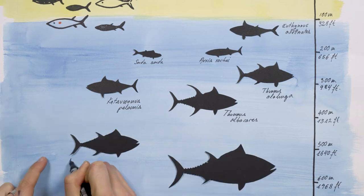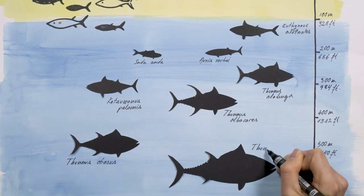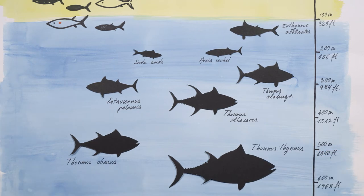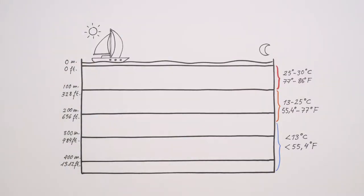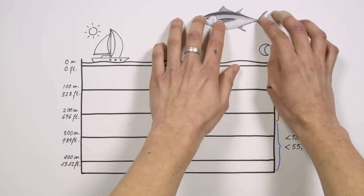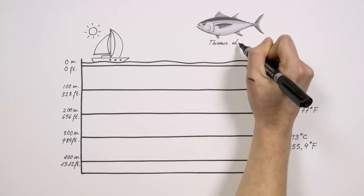These changes in depth are for feeding and for controlling their body temperature. In other words, for thermoregulation. Let's look at a day in the life of a bigeye to understand this better. This species is a good example because its behavior follows very regular patterns.